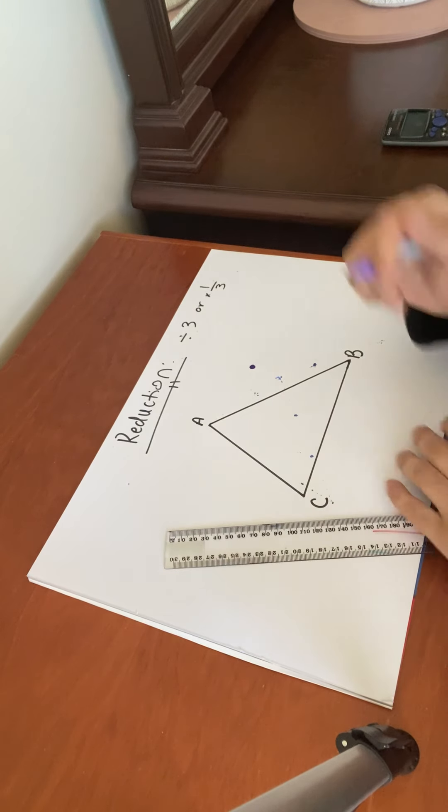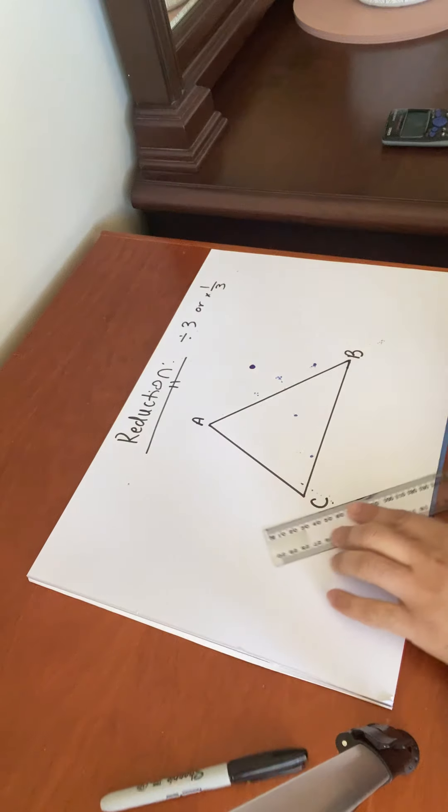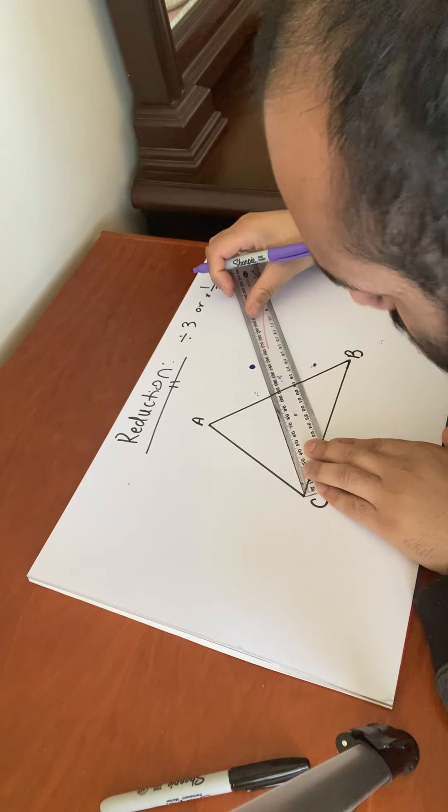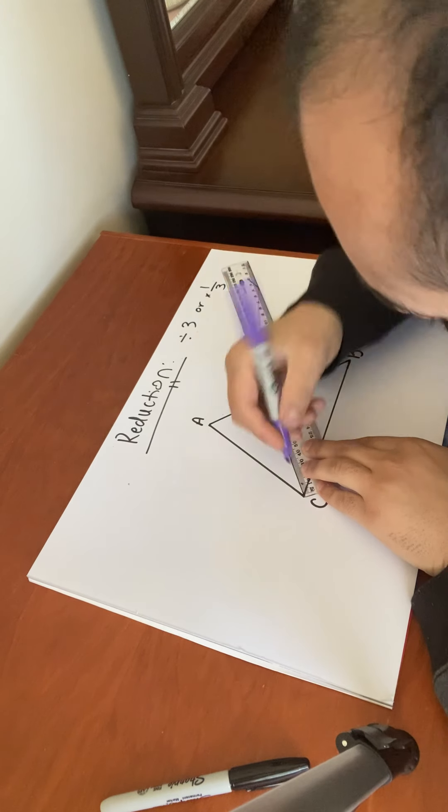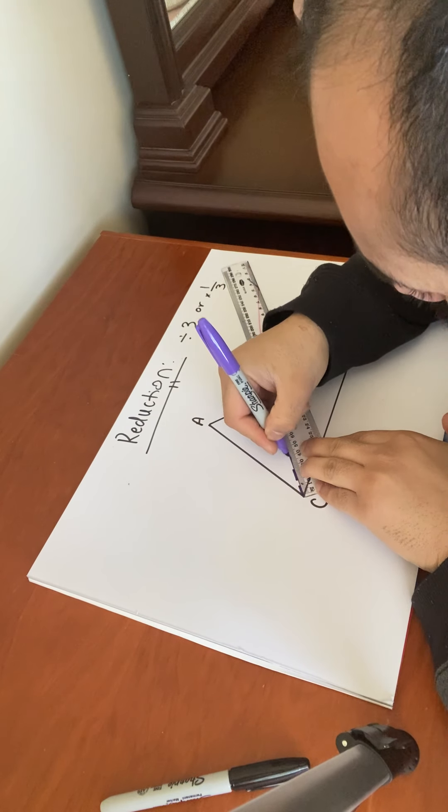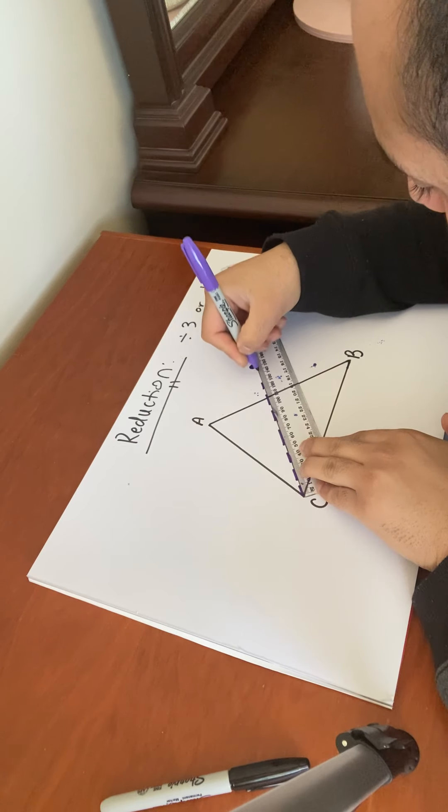Now I'm going to measure the distances, just like with enlargement. So the distance, I'm going to draw it using the dotted line to distinguish between the actual image and the new image.